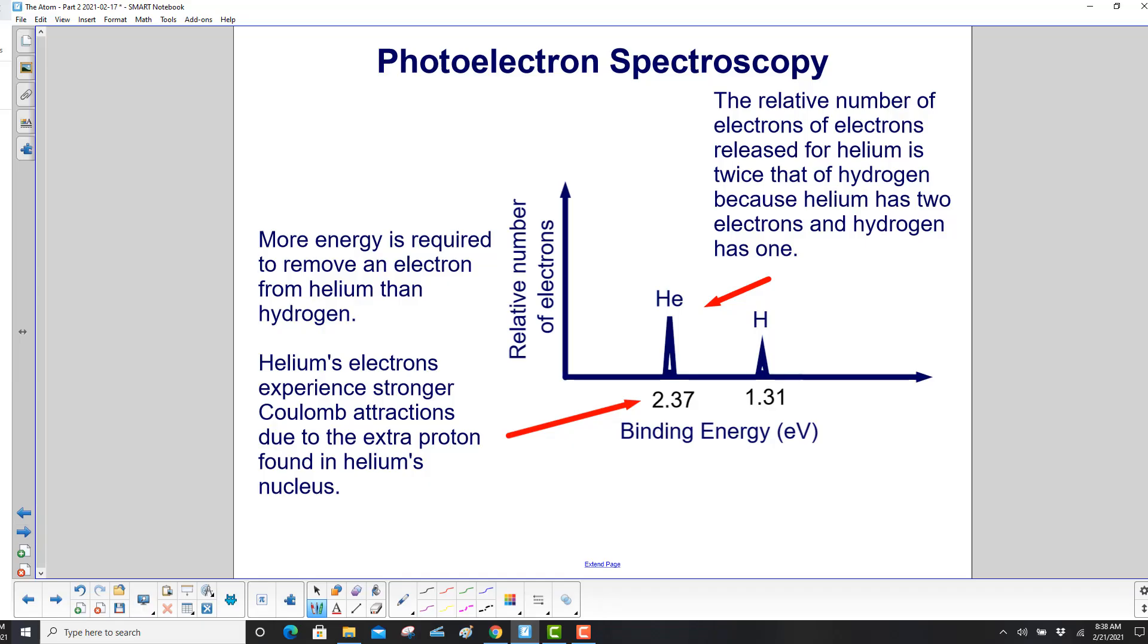Let's analyze our graph. More energy is required to remove an electron from helium than hydrogen. So helium has the higher binding energy than hydrogen. And note again, the energy levels actually increase going this way, the amount of binding energy.